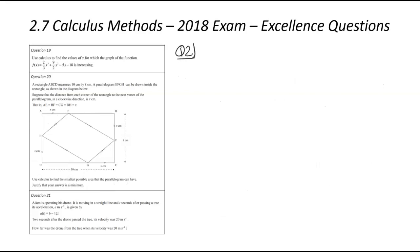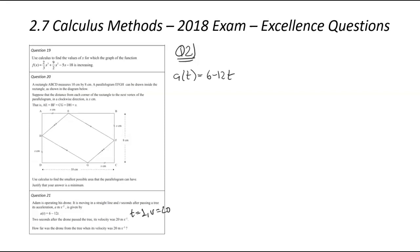We are now looking at question number 21. Adam is operating his drone — it is moving in a straight line, and t seconds after the tree has passed, there's the acceleration formula. We've been given some information about the velocity: after two seconds, so t equals 2, we know that the velocity equals 20. How far was the drone past the tree when the velocity was 20 meters per second? The key thing is it's asking how far, which means we're dealing with displacement, so we need to come up with a displacement equation.